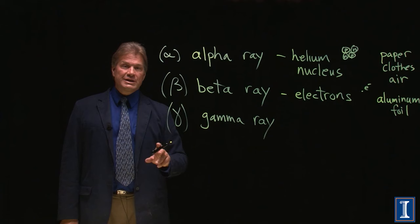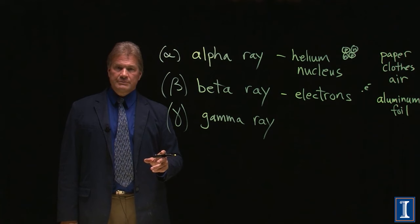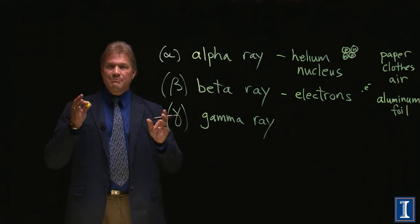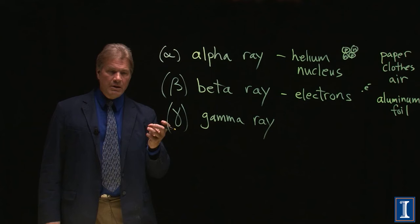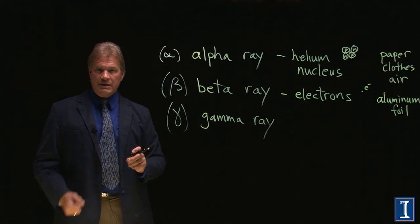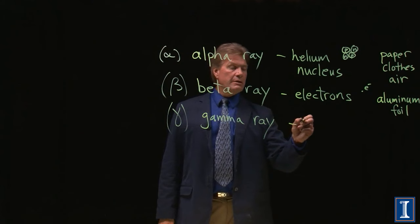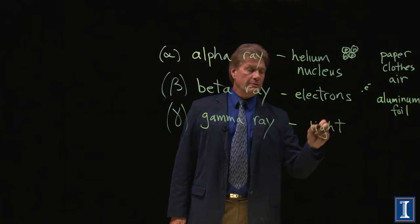This particular beta source you see being stopped by the thin piece of aluminum is chlorine-36, a radioactive form of the chlorine molecule. Chlorine-36 turns into argon-36. Basically, beta emission is taking a neutron and it turns into a proton and an electron. That's beta decay. Finally, we come to gammas. Gammas are simply light.